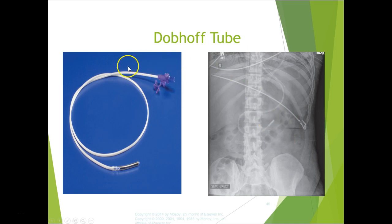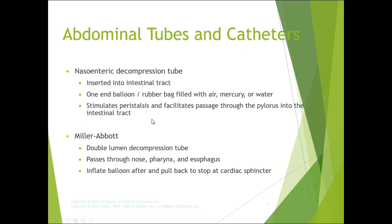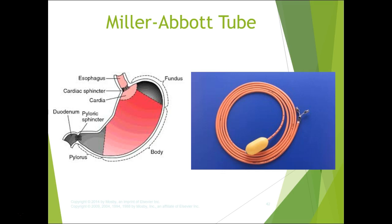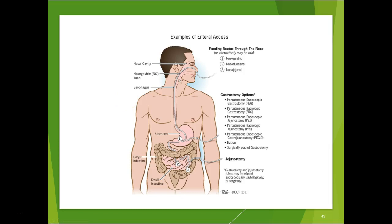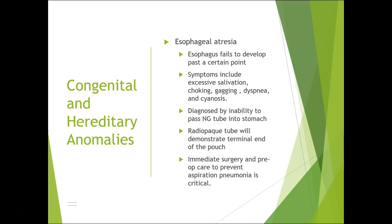The nasal intestinal decompression tube is inserted into the intestinal tract; it has a balloon filled with air, mercury, or water that stimulates peristalsis to facilitate passage through the pylorus. The Miller-Abbott tube is a double-lumen decompression tube that passes through the nose, pharynx, and esophagus; a balloon is inflated and pulled back to sit at the cardiac sphincter. On the image you can see the fundus, body, pylorus, lesser and greater curvature, and the tube sitting right there.